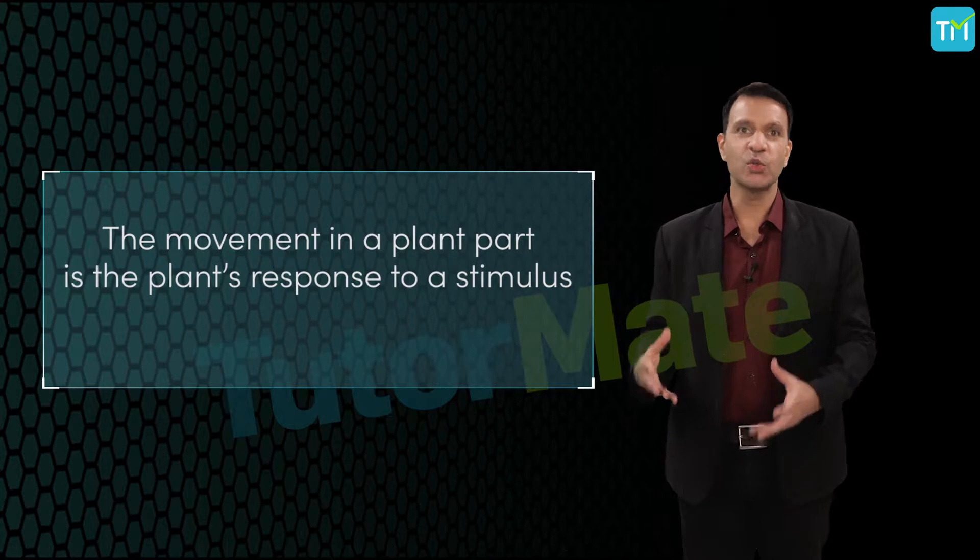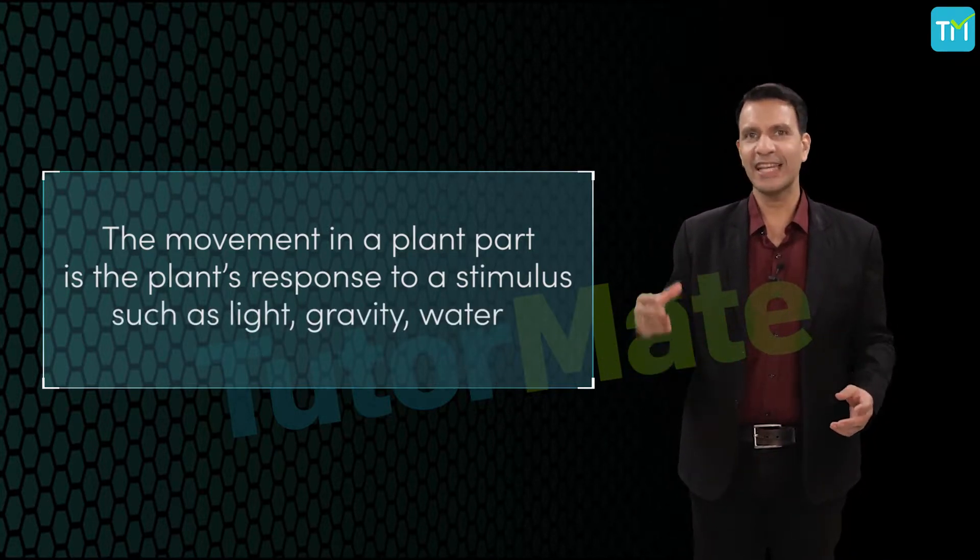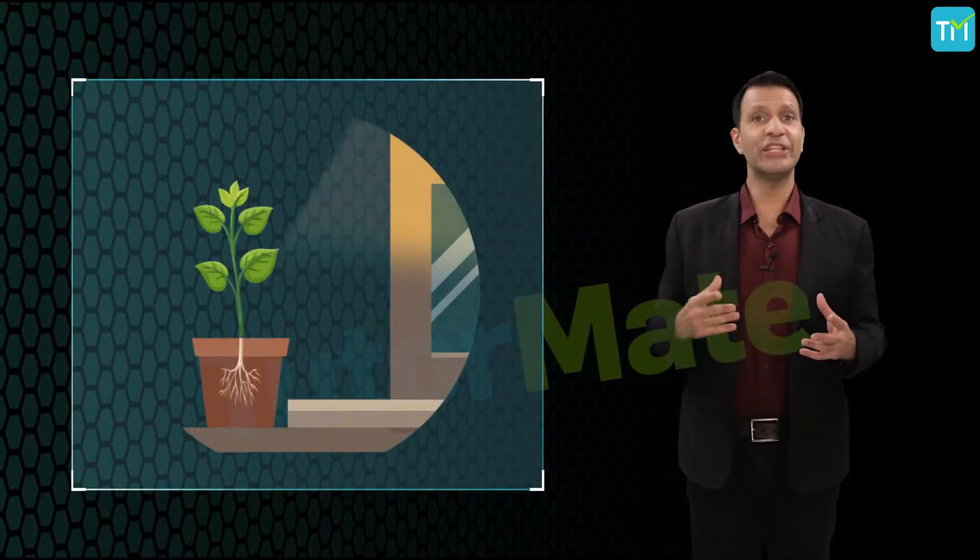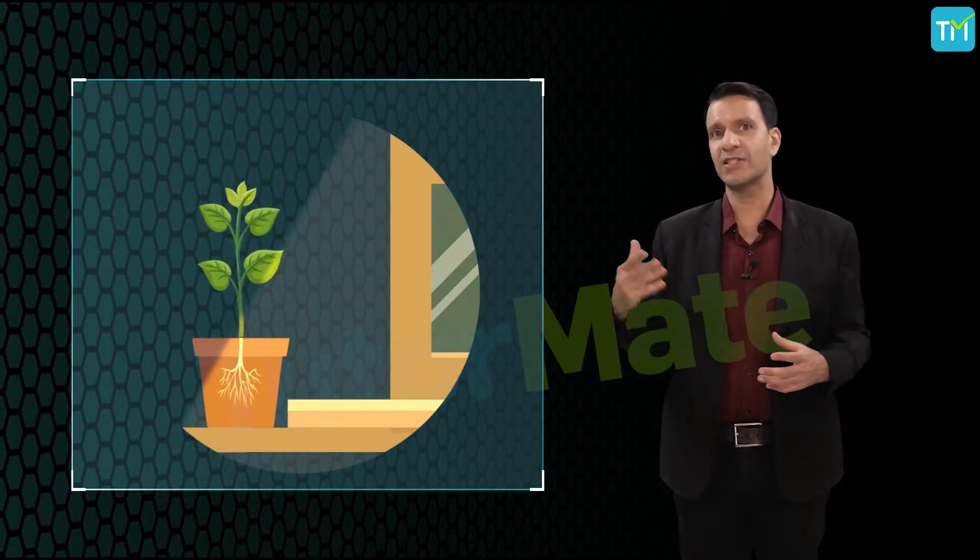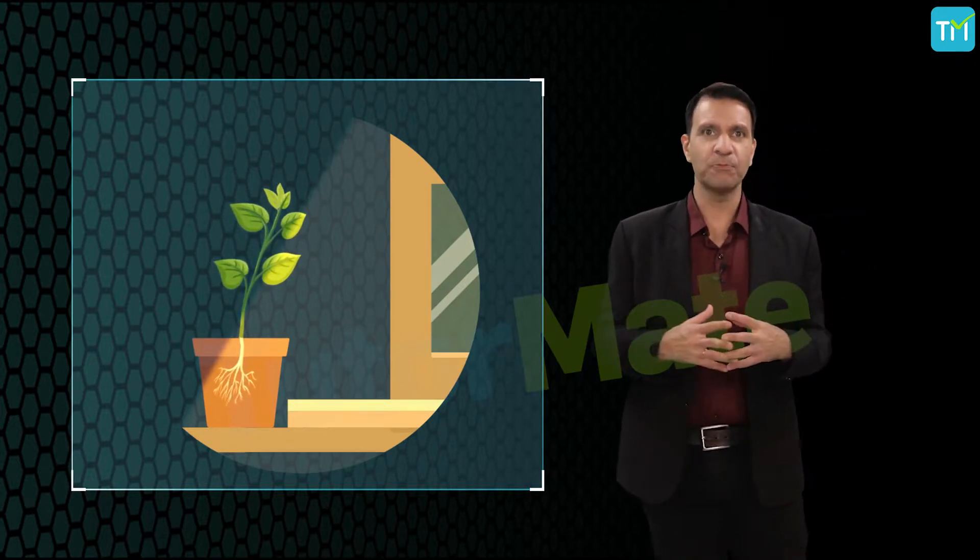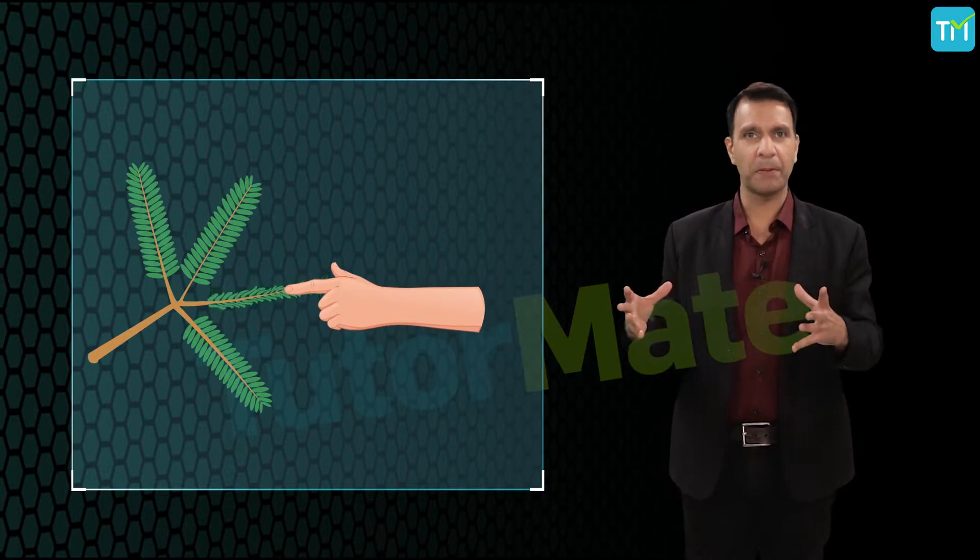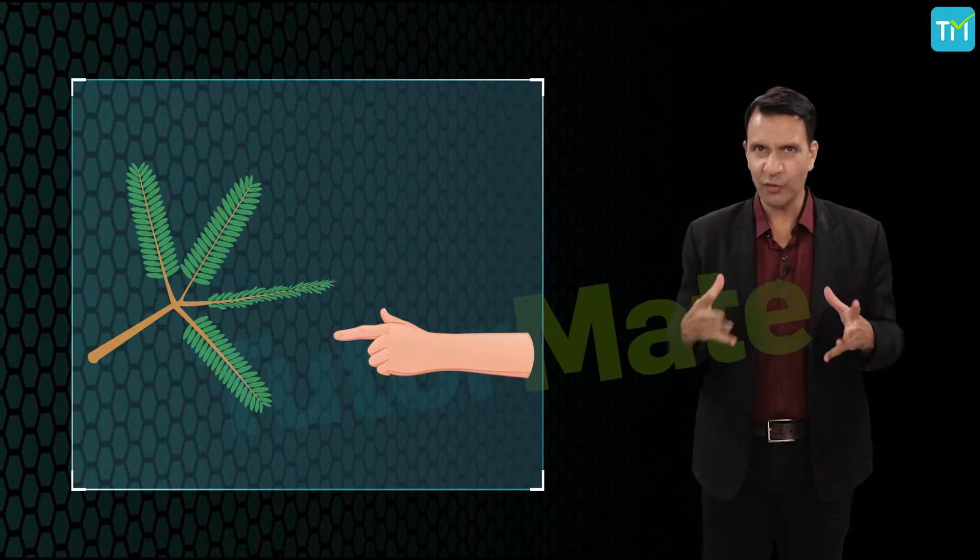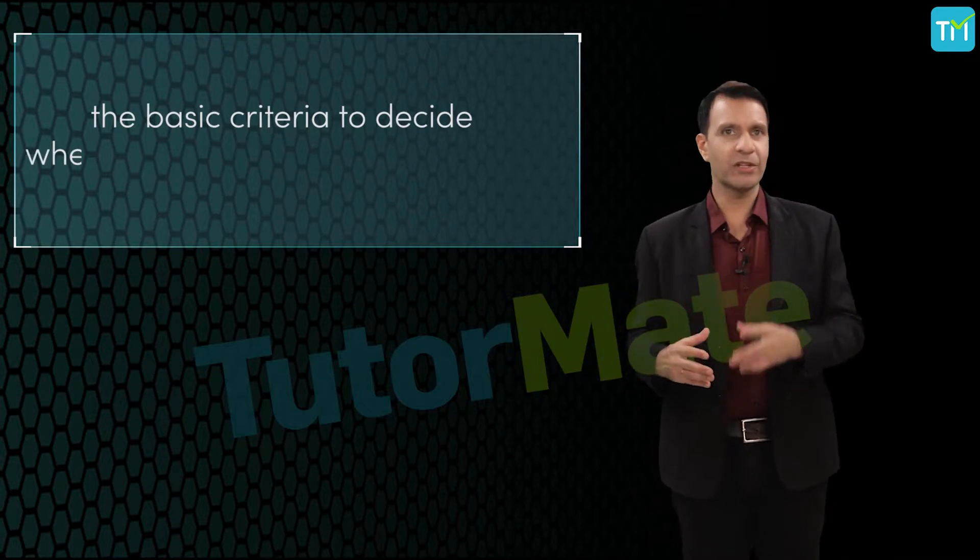Let me explain with an example. The shoots, the leaves and flowers of any plant move by bending towards the sun so as to face the sunlight. Another example of plant movement is the touch-me-not plant, where if you touch the leaves of the plant they move by folding up. So the crux of it all is that movement is the basic criteria to decide whether a thing is living or non-living.